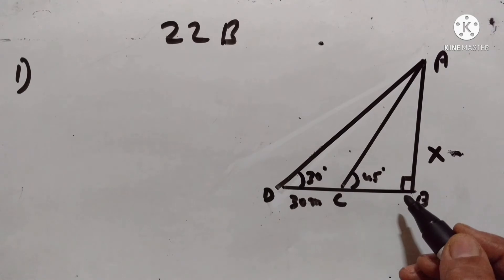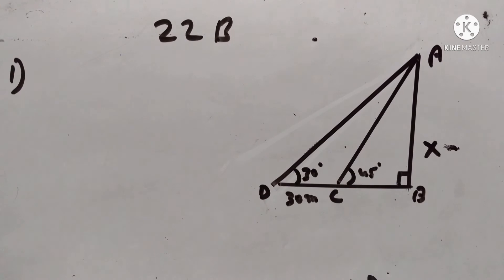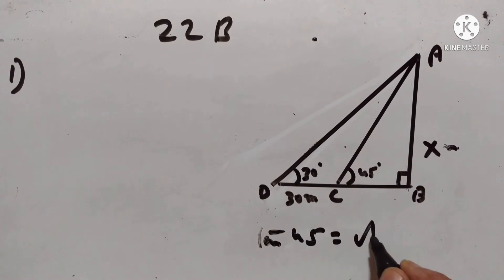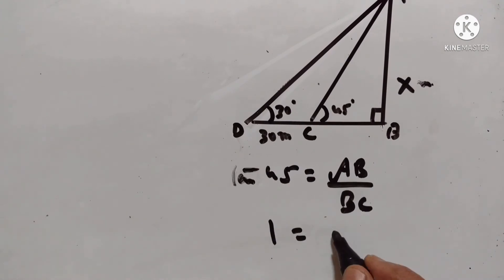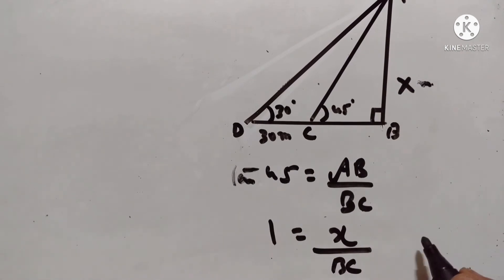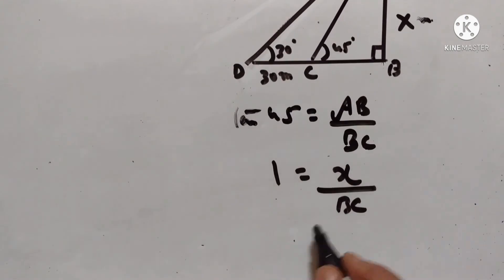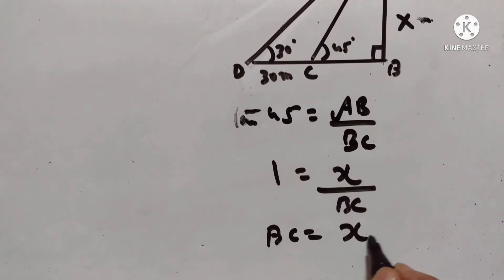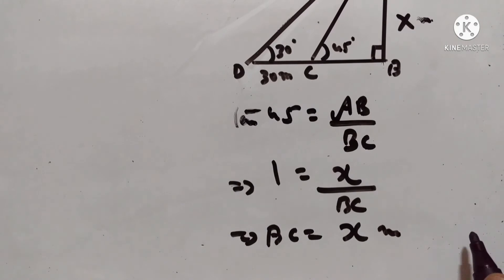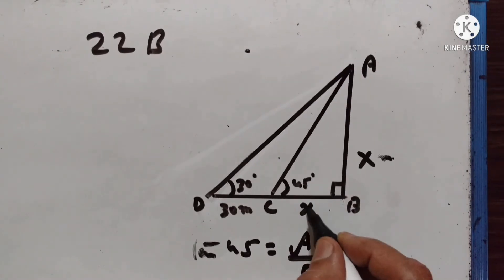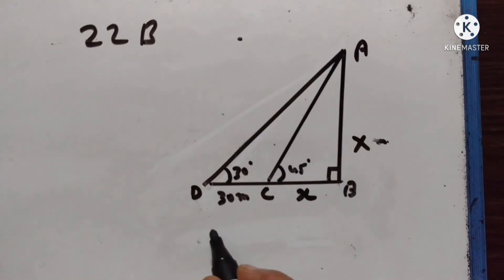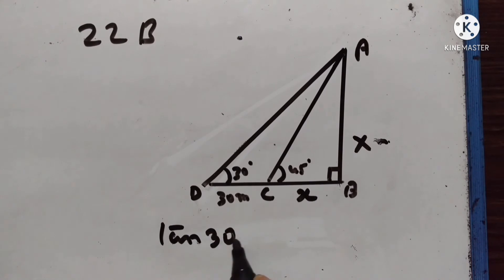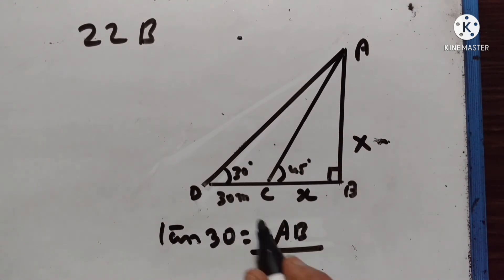Without using tables, find x. Tan 45 is equal to AB upon BC. Tan 45 is equal to 1, AB is equal to x, therefore BC is equal to x meters. BC is equal to x meters.